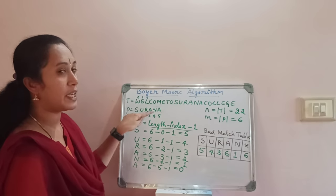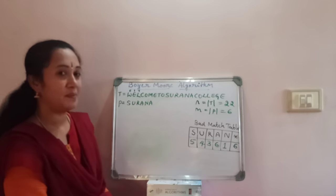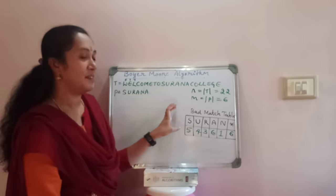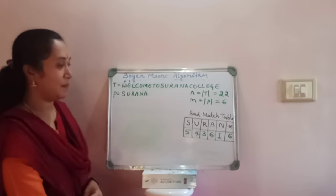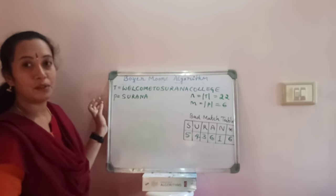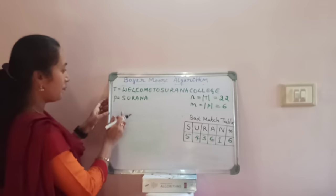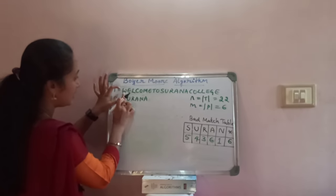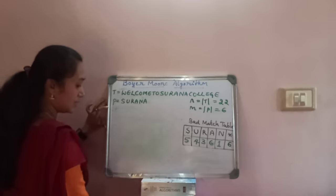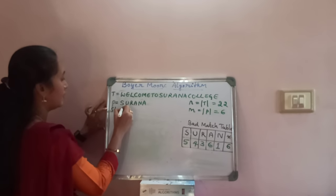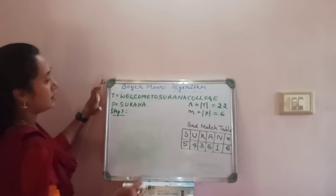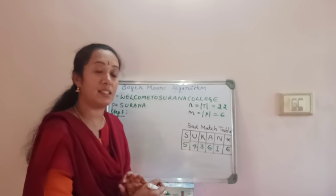These are the characters taken from the pattern. This is how we construct the bad match table — this is the pre-processing step in the algorithm. Now moving to the main part of the algorithm where we are going to match the characters of the pattern with the given text. The first 6 characters will be considered for the first step in the matching. This is step 1.